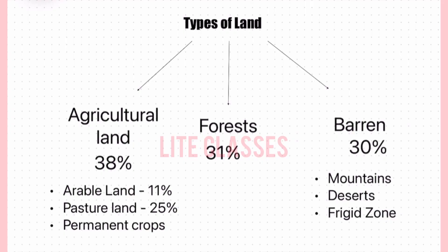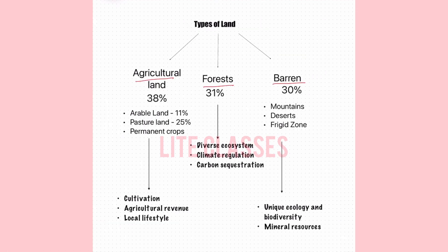Land can be categorized into three primary types: agricultural, forest, and barren. Agricultural land is primarily utilized for cultivation, shaping economies through agricultural income and local lifestyles. Forested regions not only house diverse ecosystems but also play a pivotal role in climate regulation and carbon sequestration. Barren land, often seen as unproductive for habitation or agriculture, holds its own unique ecological importance and potential resources. Understanding these distinct land types is crucial as we dwell deeper into their individual characteristics and significance.